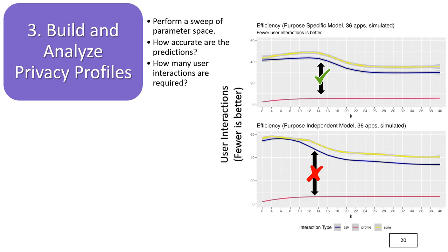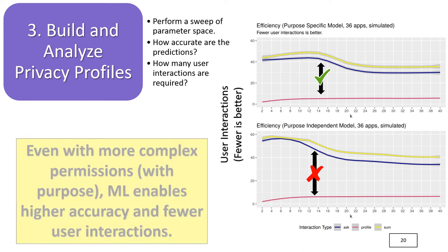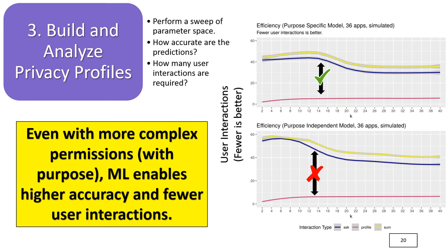The number of user interactions is further explored in the graph on the right-hand side. The blue line represents questions required after the fact when profiles cannot make accurate recommendations. The red line represents questions required to profile the user and organize them into one of the K profiles. The yellow line shows the sum of the other two. The efficiency of the model including purpose is much higher across almost all values of K than the model which does not, showing that even with more complex permissions models including the extra dimension of purpose, machine learning enables higher accuracy with fewer overall user interactions — the best of both worlds.